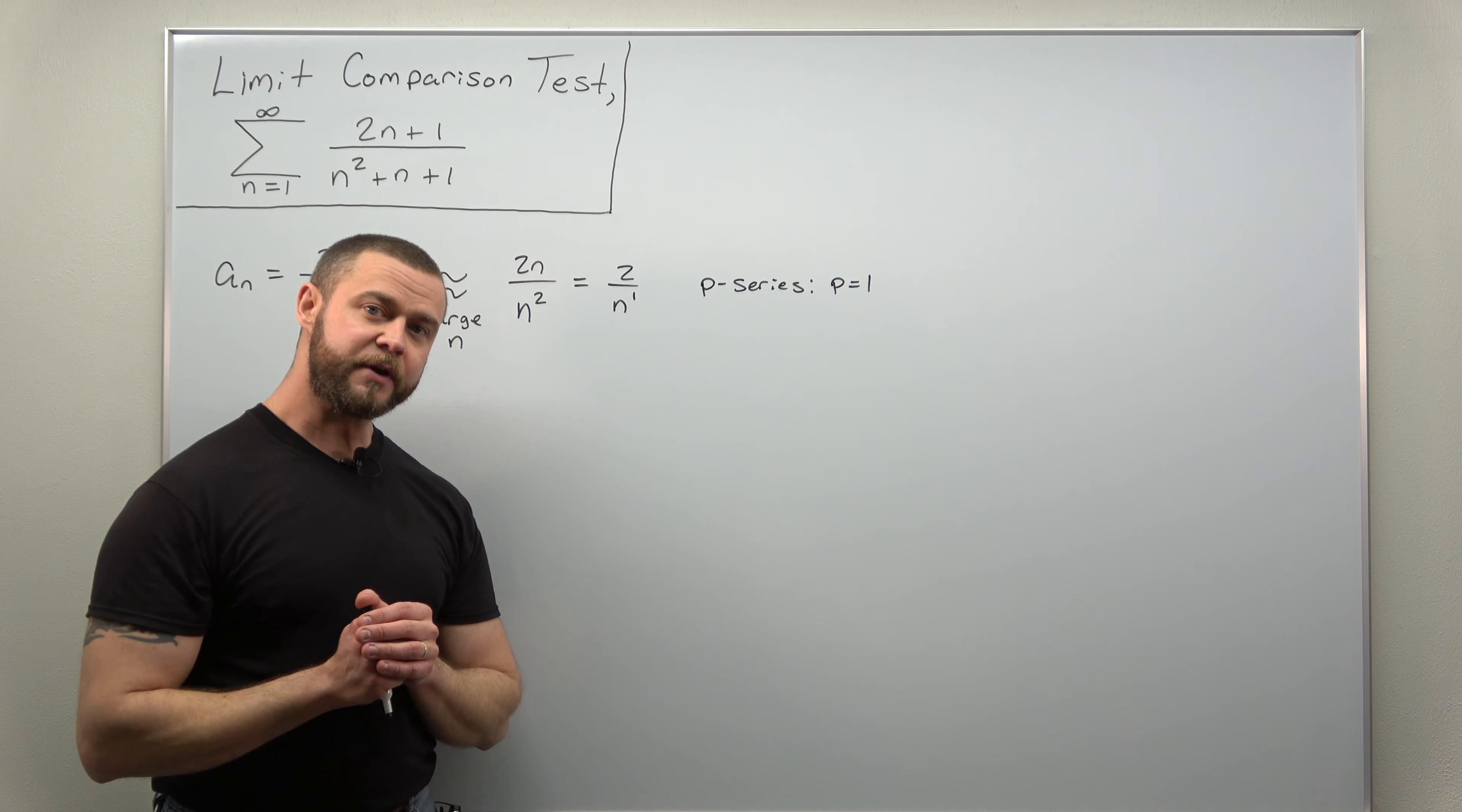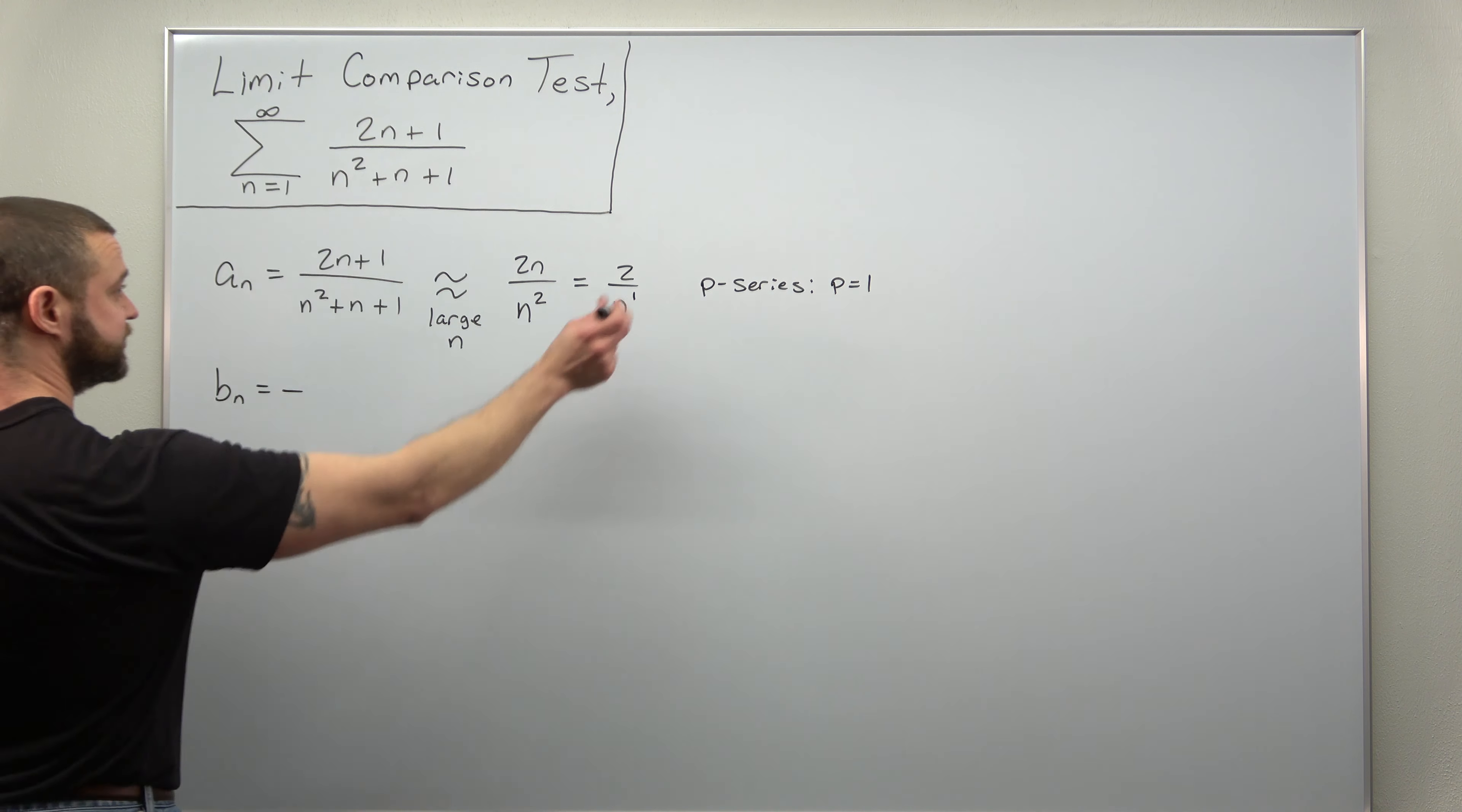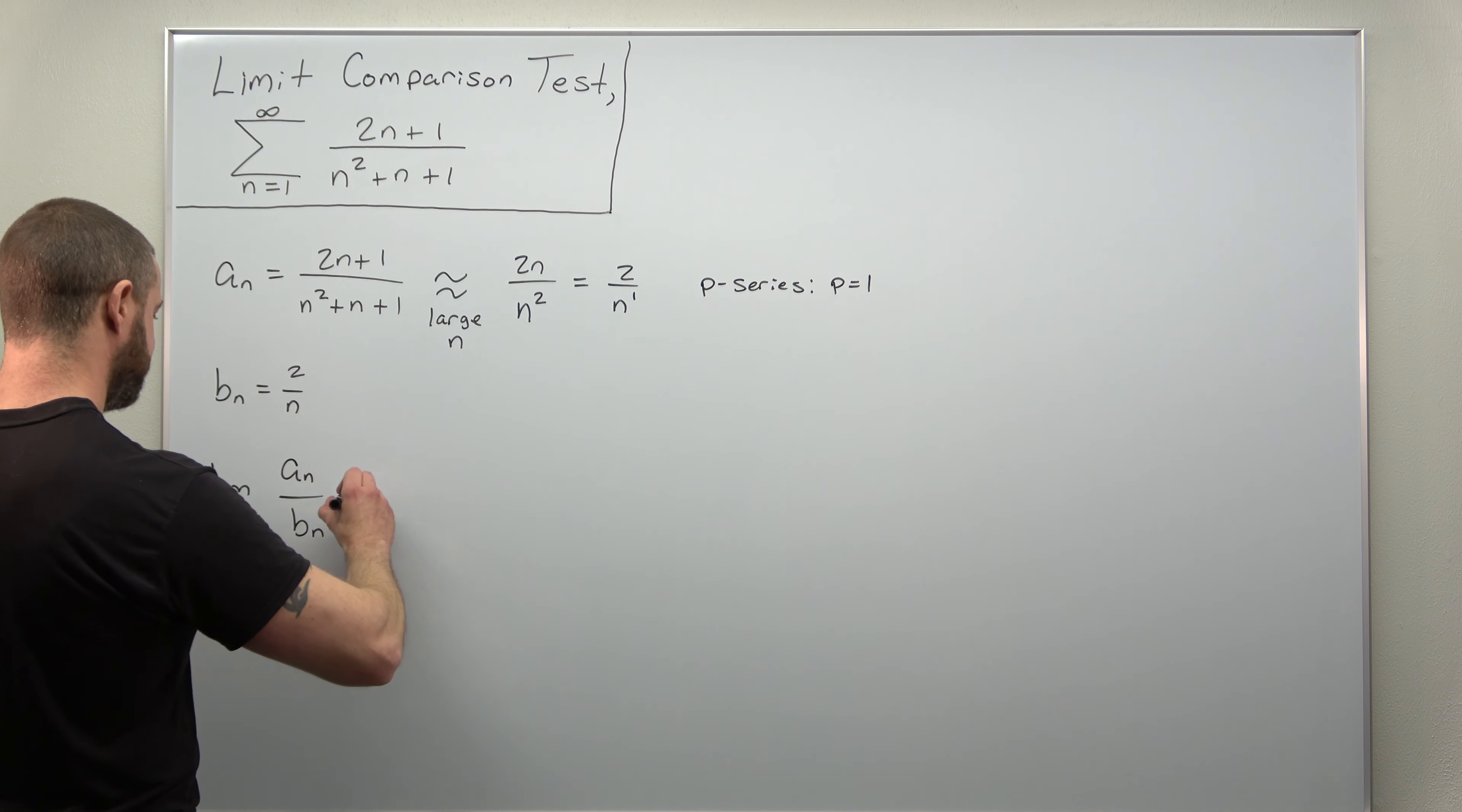So what we need to go through now is the calculation of the limit of a_n divided by b_n. So let's define our comparison infinite series term as 2 over n. We're going to calculate the limit as n goes to infinity of a_n divided by b_n.